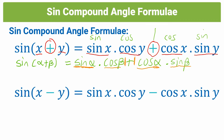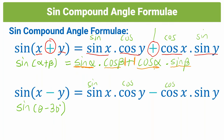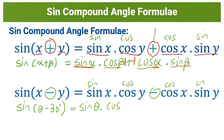We can also have the difference between two angles. For example, sin(θ − 30°): applying sin cos, cos sin, same sign — that's sin θ times cos 30° minus cos θ times sin 30°. The minus stays the same. On either side for theta we have a sine and a cos, and for 30° we have cos and sine.